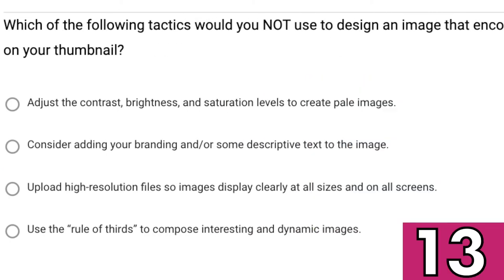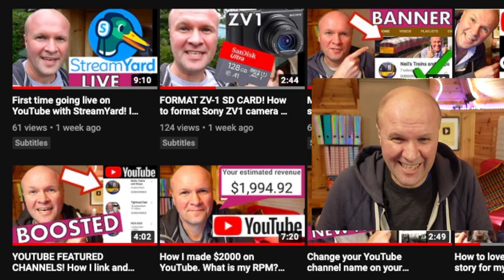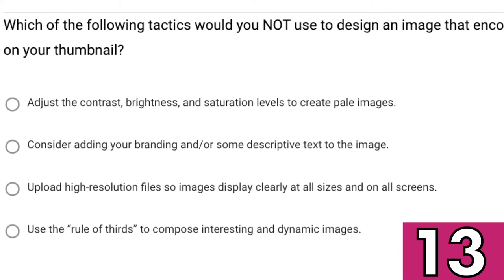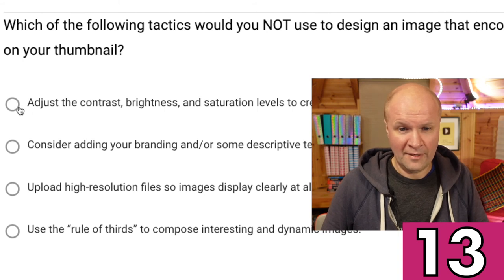Which of the following tactics would you NOT use to design an image that encourages viewers to click on your thumbnail? Adjust the contrast, brightness, and saturation levels to create pale images. Consider adding your branding and/or some descriptive text. Upload high-resolution files so images display clearly at all sizes. Or use the rule of thirds to compose interesting and dynamic images. I think I'll go for the pale images.